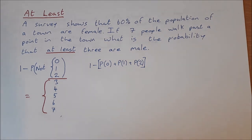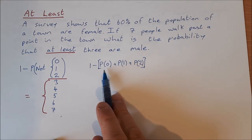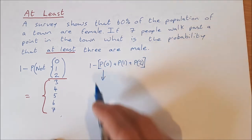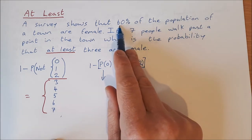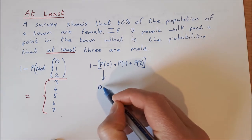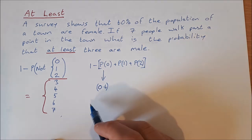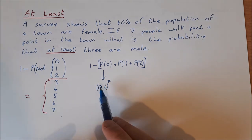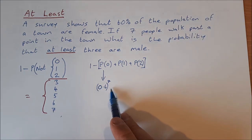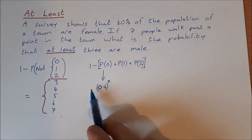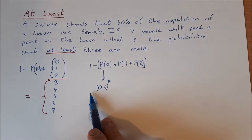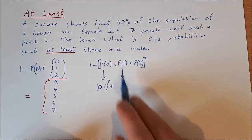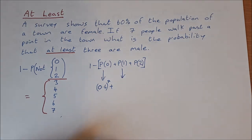Let's take each of these individually. This is a Bernoulli trial. The probability that none of them are male means they're all female. The probability of a female walking by is 0.6, and there are 7 people, so that's 0.6 to the power of 7. Technically it's also multiplied by 7 choose 0 and 0.4 to the power of 0, both of which equal 1, so we don't need to include those.